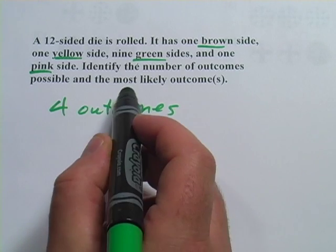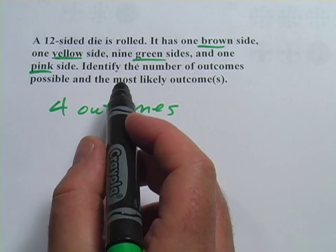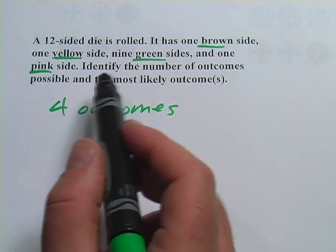Now the second half of this question is, what's the most likely outcome? Well, hopefully it's obvious to you that the most likely outcome is going to be the color that's on most sides.